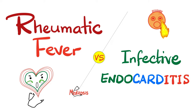We can classify heart diseases any way we want — anatomically, for example, disease of the endocardium, myocardium, and pericardium. We can also divide them as ischemic heart diseases, congenital heart diseases, infectious heart diseases, neoplastic heart diseases, and much more. We talked about rheumatic fever in its own video, and infective endocarditis on a separate occasion. Today it's time to compare between rheumatic fever and infective endocarditis.